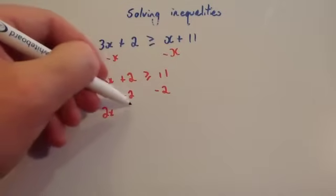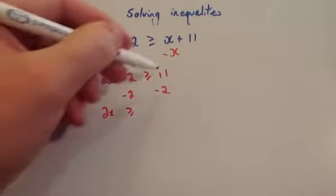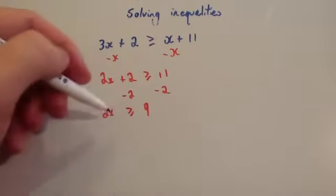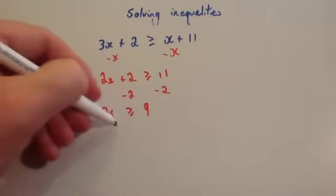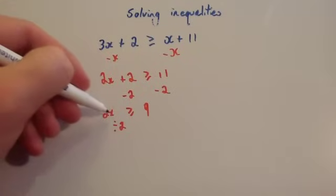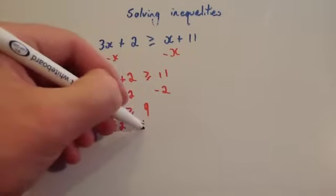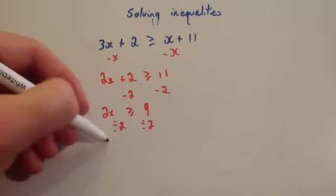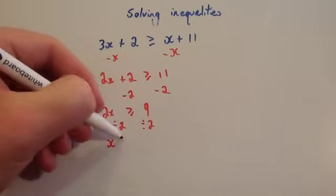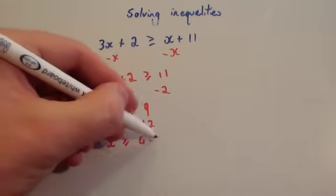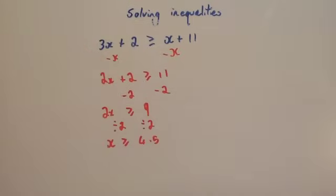2 take away 2 is 0, so you've got 2x is bigger than or equal to 9. Then divide both sides by 2 to get rid of the times by 2, and x is bigger than or equal to 4.5. So there you go — you've solved the inequality.